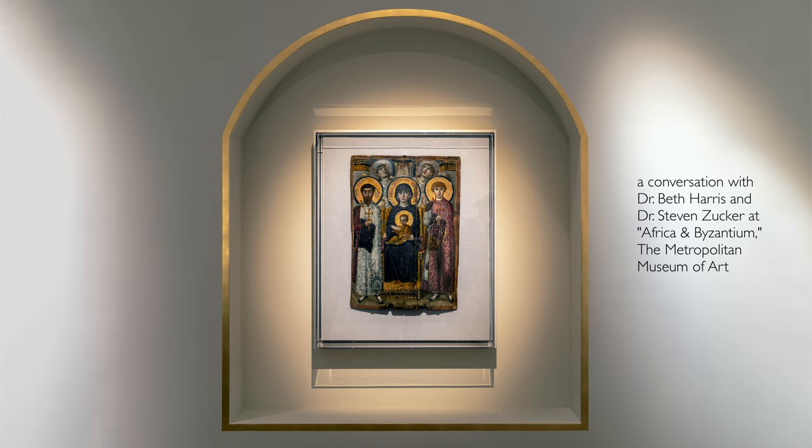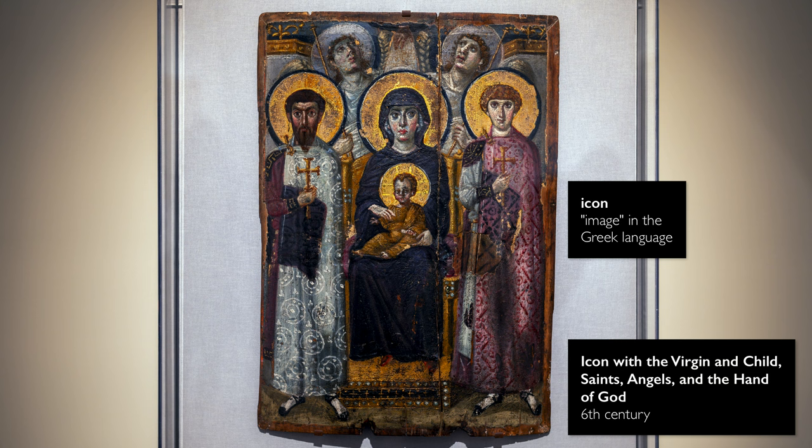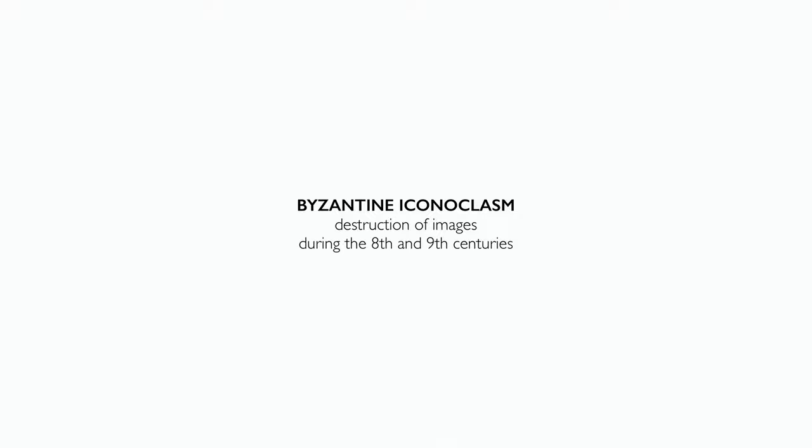We're at a special exhibition at the Metropolitan Museum of Art, Africa and Byzantium, and we're looking at an icon — in fact one of the oldest icons that has survived. When we use that term we're generally referring to a sacred image, in this case the Virgin Mary holding the Christ child on her lap, a saint on either side of her, two angels behind them, and the hand of God.